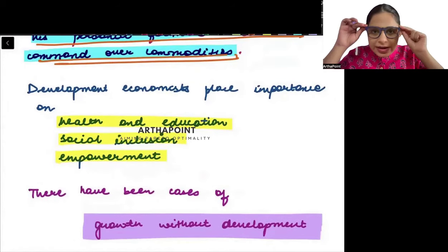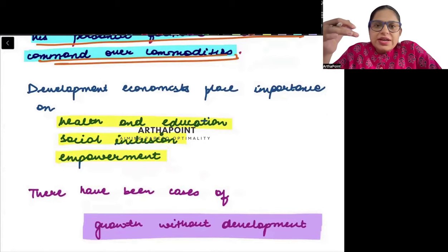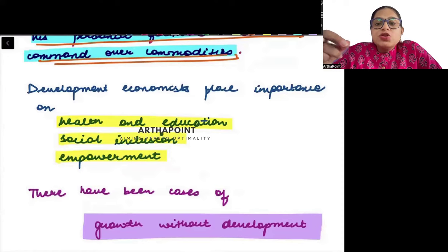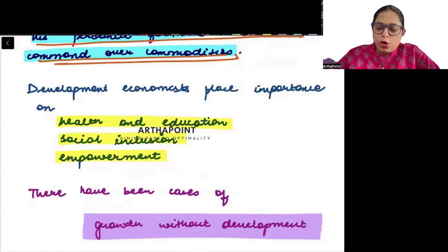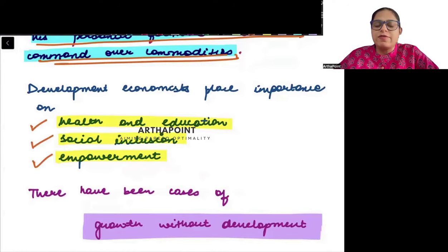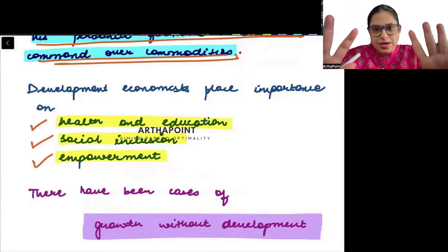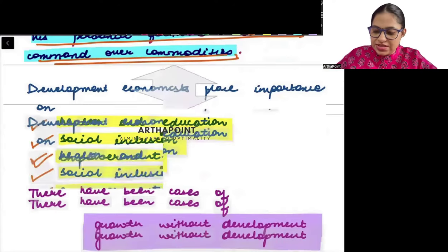Capability approach actually tells us why development economists put a lot of importance on health and education, social inclusion, empowerment. Why does development economics focus so much on health and education?